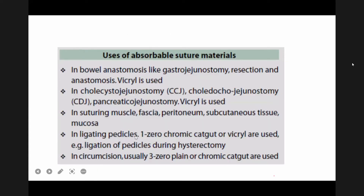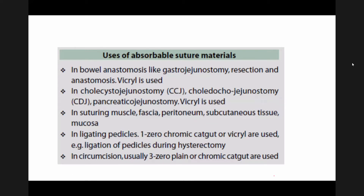Absorbable sutures are used in bowel anastomosis — gastrojejunostomy, resection anastomosis of small bowel, or colonic anastomosis. In cholecystojejunostomy, hepaticojejunostomy, and pancreaticojejunostomy, absorbable sutures like Vicryl or, preferably, monofilament sutures like PDS or Maxon are used. Absorbable sutures are also used for suturing muscle fascia, peritoneum, subcutaneous tissue, ligating pedicles, and in circumcision.